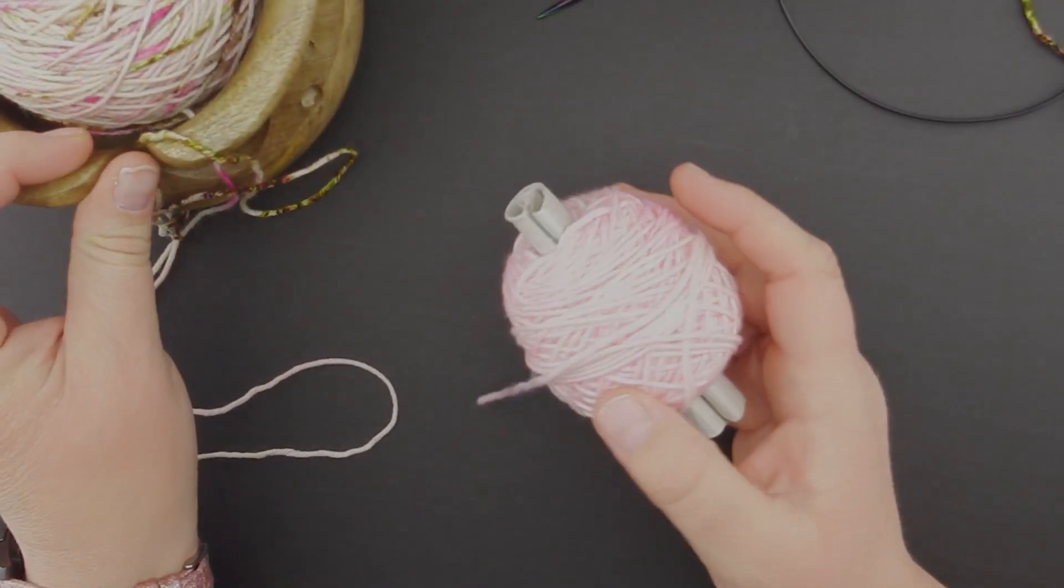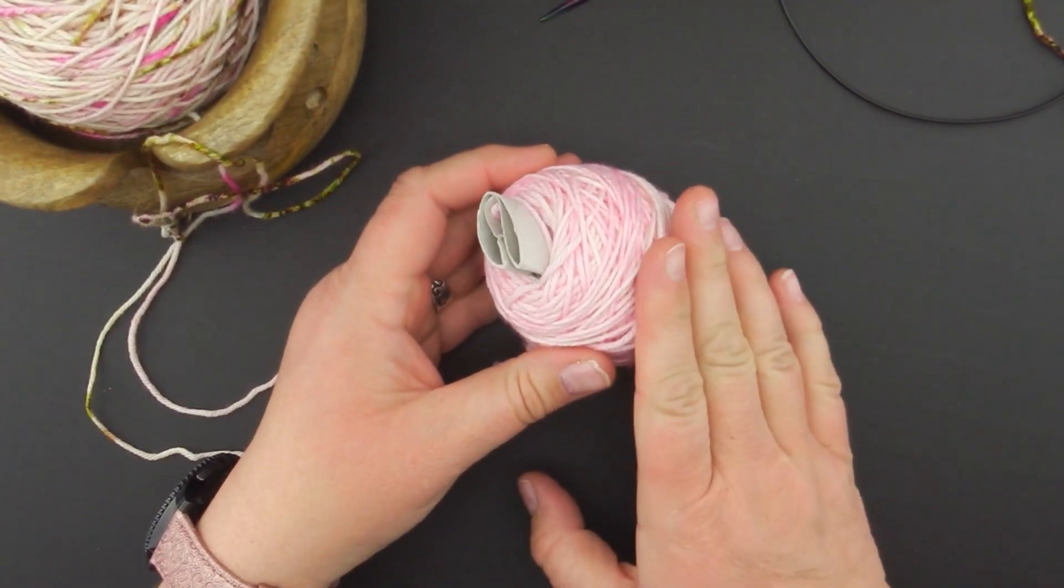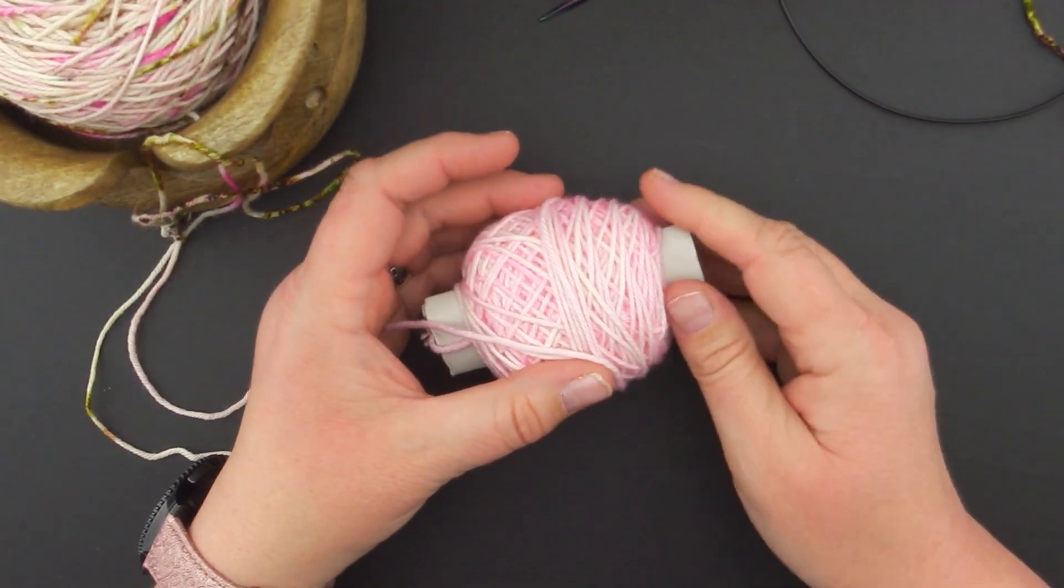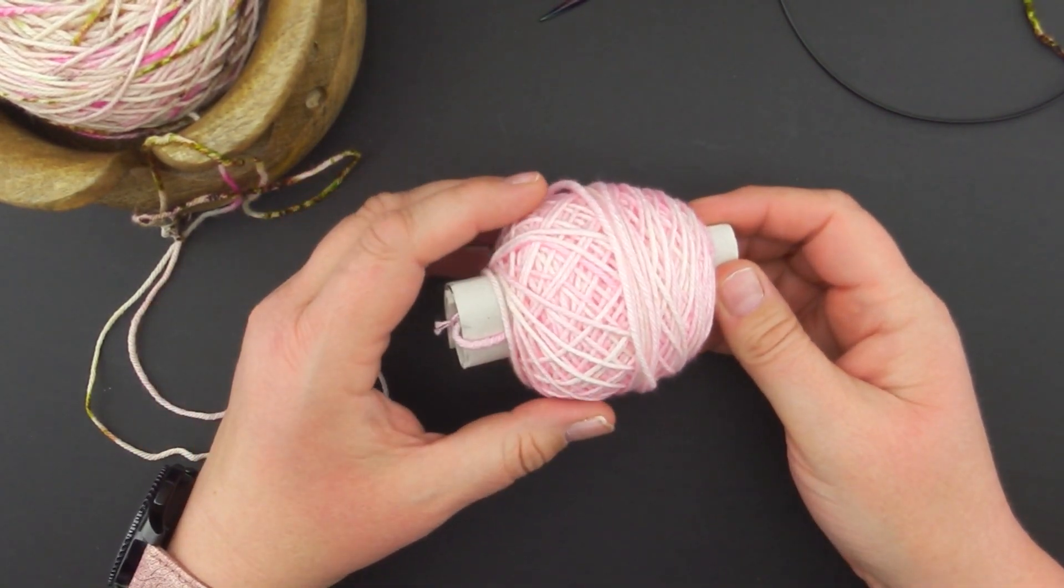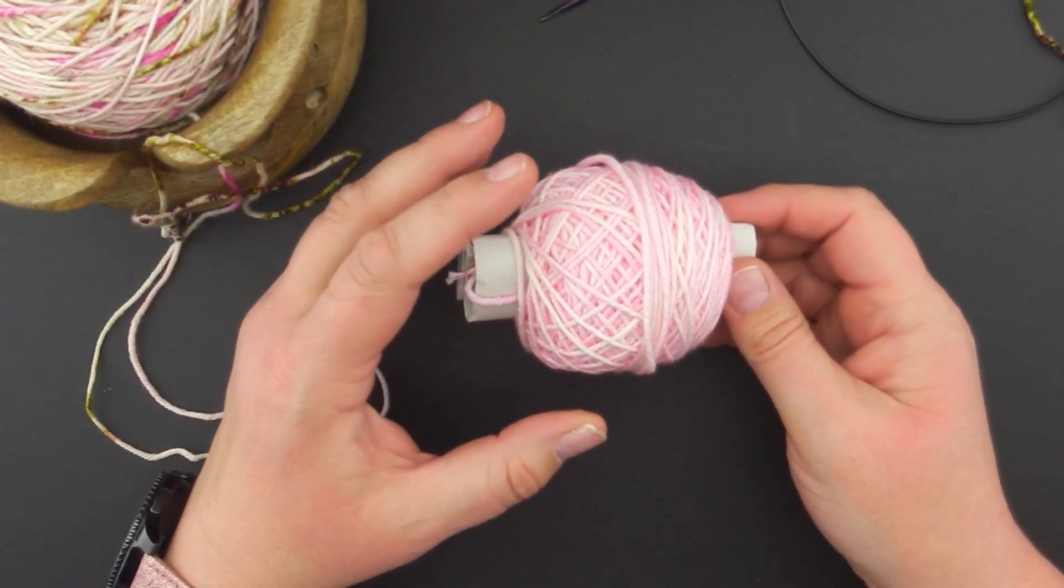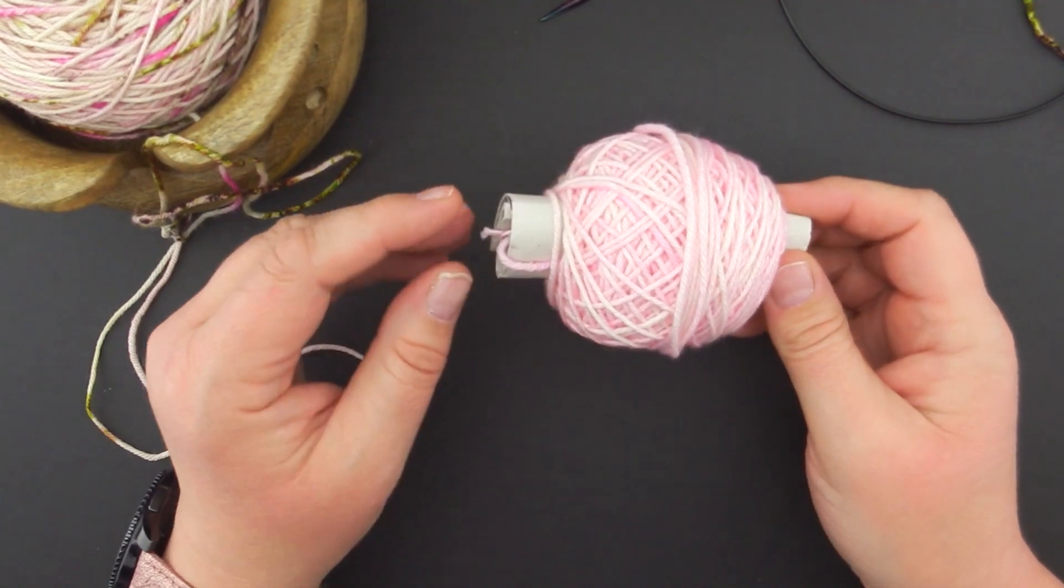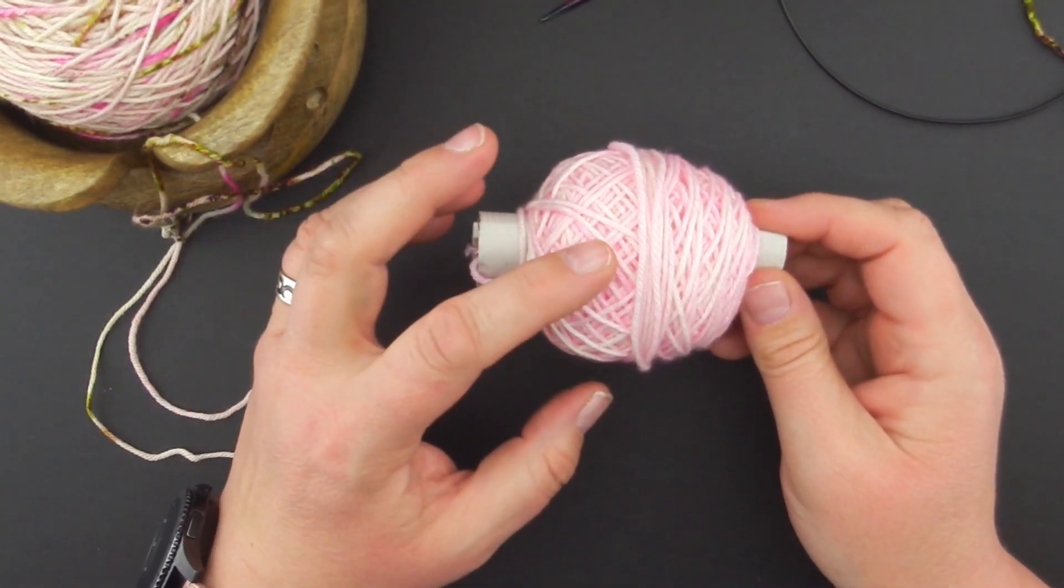All right, so today we're going to talk about the Ballerina Bliss cuffs. This is the yarn that I used for the pattern cuffs, and it's Ballerina Bliss or Keep Calm and Be a Ballerina, and it's out of her Delight Decay.